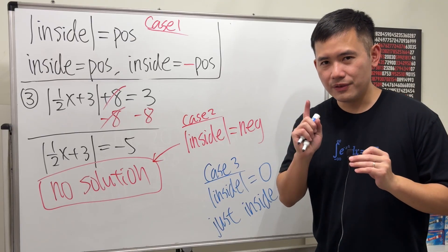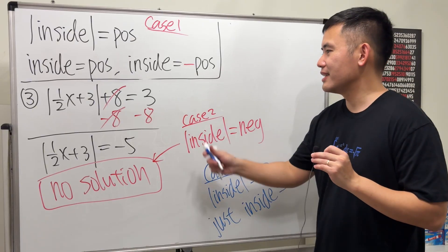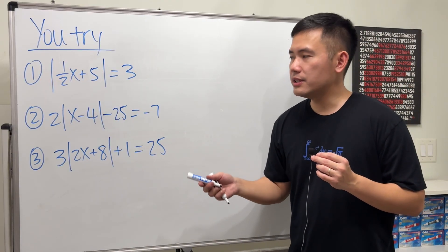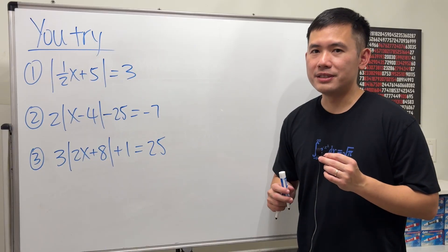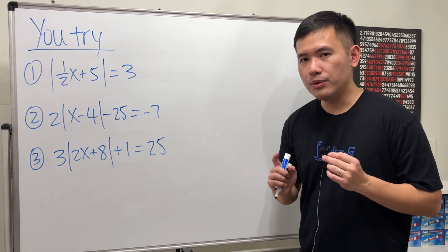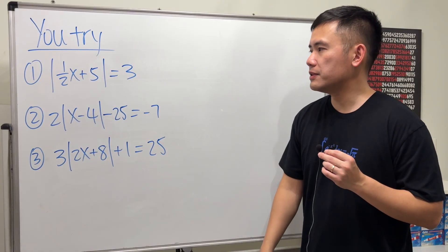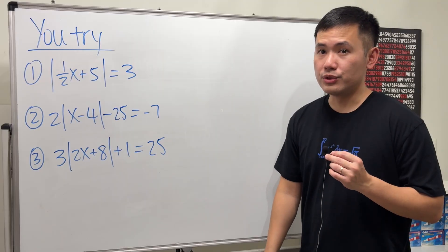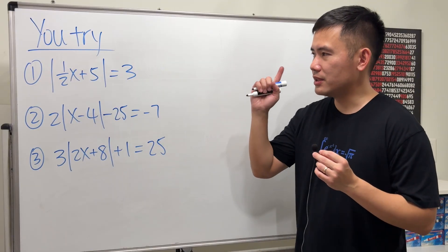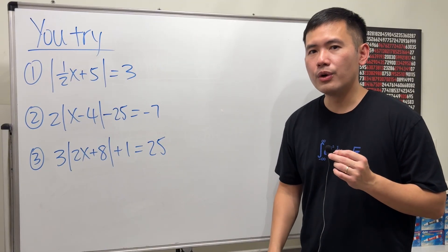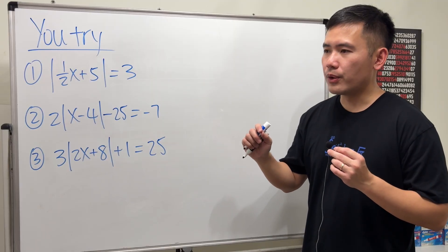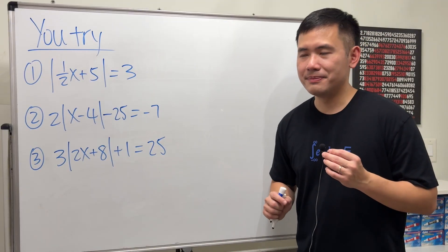Hopefully this helps. Go ahead and try the three practice questions and put your answers in the comments. If you'd like to understand why absolute value gives you two solutions sometimes, check out the linked video — it covers the concept behind absolute value and distance.